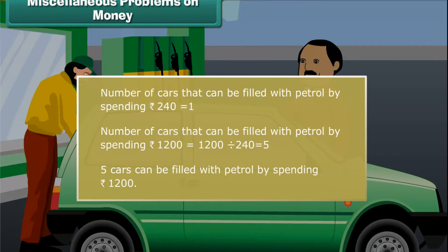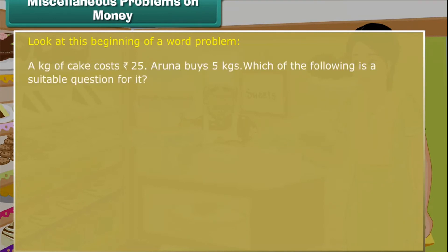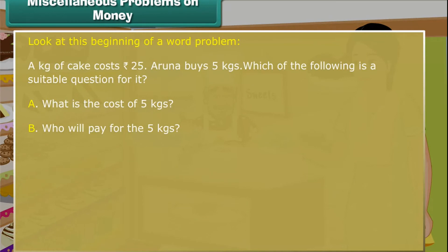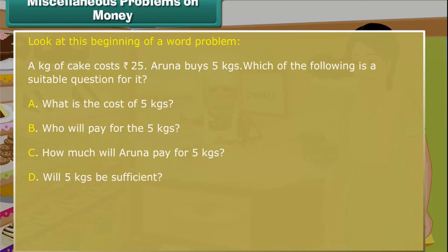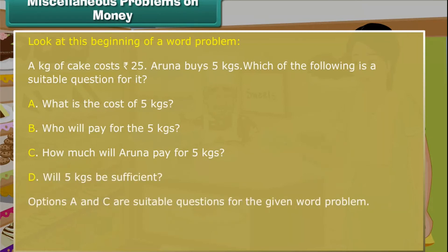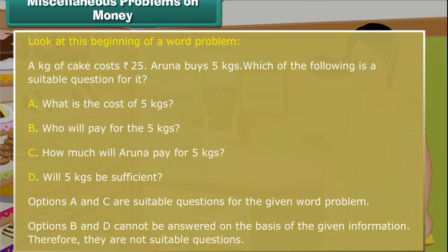So far we have answered questions given to us. Let us now frame some questions. Look at this beginning of a word problem: A kilogram of cake costs 25 rupees. Aruna buys 5 kg. Which of the following are suitable questions? Option A: What is the cost of 5 kg? Option B: Who will pay for the 5 kilograms? Option C: How much will Aruna pay for 5 kilograms? Option D: Will 5 kilograms be sufficient? Option A and C are suitable questions. Option B and D cannot be answered from the given information, so they are not suitable questions.